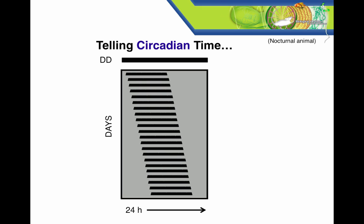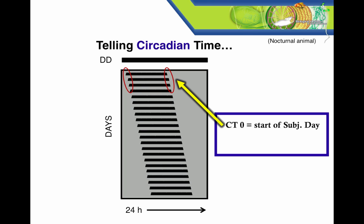So how do we tell what circadian time it is? Circadian time is based on the timing of transitions between the organism's subjective day and subjective night, whether that organism is nocturnal or diurnal. The start of subjective day is CT0, and the start of subjective night is CT12. So, for this nocturnal organism, the start of subjective night, CT12, coincides with the start of activity, whereas it would co-occur with the start of rest for a diurnal organism. We use CT0 or CT12 as anchors, and then we can derive other times, like CT14, from these reference points.